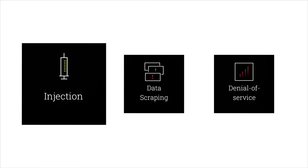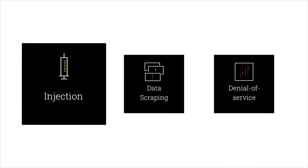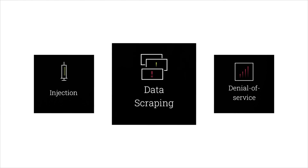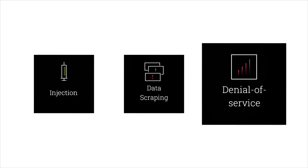API abuse comes in various forms, with injection attacks, data scraping, denial-of-service attacks, and exploitation of vulnerabilities being the most common. Injection attacks involve tricking an API into revealing unauthorized information by exploiting vulnerabilities, such as SQL injections. Data scraping occurs when attackers repetitively request data from an API, accumulating a large volume of information. Denial-of-service attacks overload an API with traffic, rendering it unable to function.